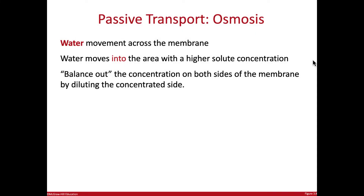Passive transport is when materials move across a biological membrane without requiring additional energy. One type of passive transport is called osmosis, and this one is specifically when water is moving across the membrane. This is different than the solutes moving across the membrane — solutes are the substances dissolved in the water. Here we're actually looking at the water molecules moving across the membrane.